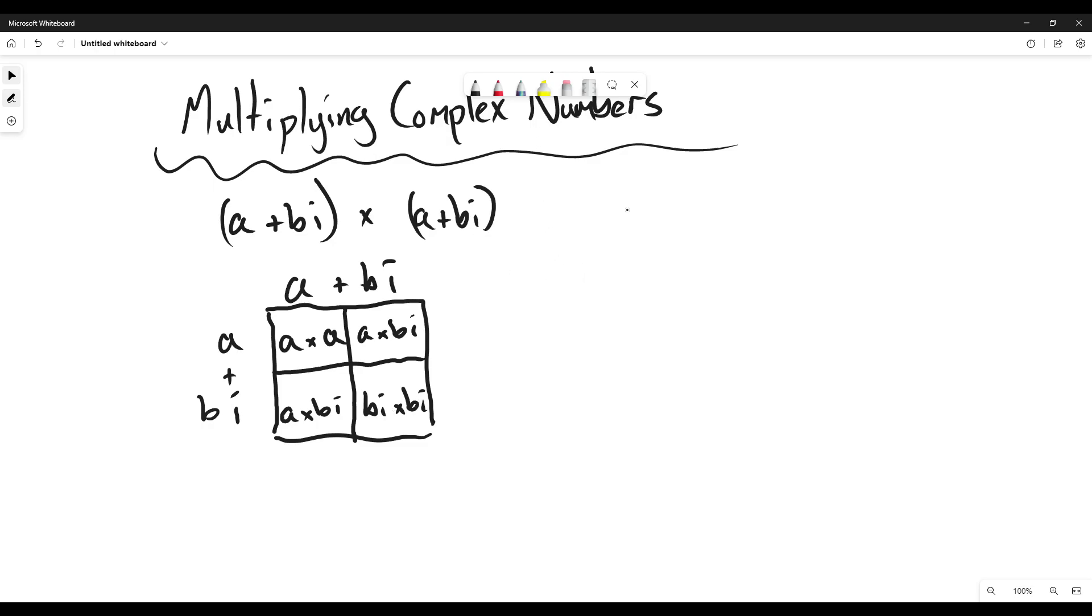So let's create an example. Let's say we have something simple, 2 + 2i in parentheses times, let's say 3 + 4i. So let's create our box. We have 2 + 2i. It doesn't matter what order you do them in because you'll get the same result. 2 + 2i, create our little box.